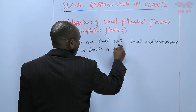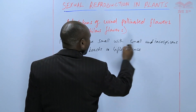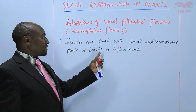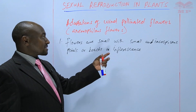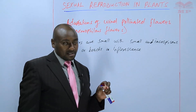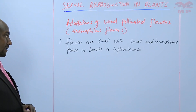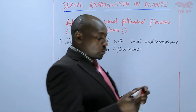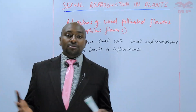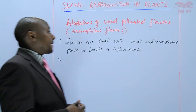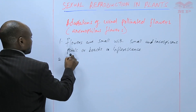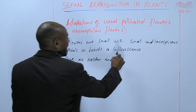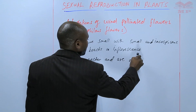They may exist as petals, some as bracts, or as inflorescences that are small and inconspicuous, so they are not very easy to identify. Another feature is that since these flowers do not need to attract the wind — because the wind will just come about — they have no nectar and are not scented.